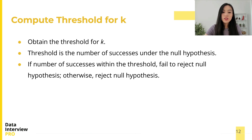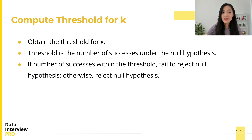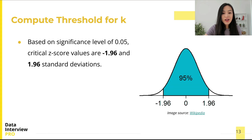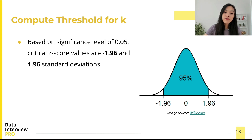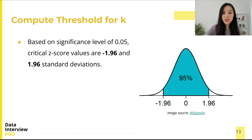If we observe a number of successes within the threshold, we fail to reject the null hypothesis and conclude the coin is fair. Otherwise we reject the null hypothesis. To calculate the threshold, we find the critical value based on our choice of significance level. The critical z-score values when using a 95% confidence level are negative 1.96 and positive 1.96 standard deviations.